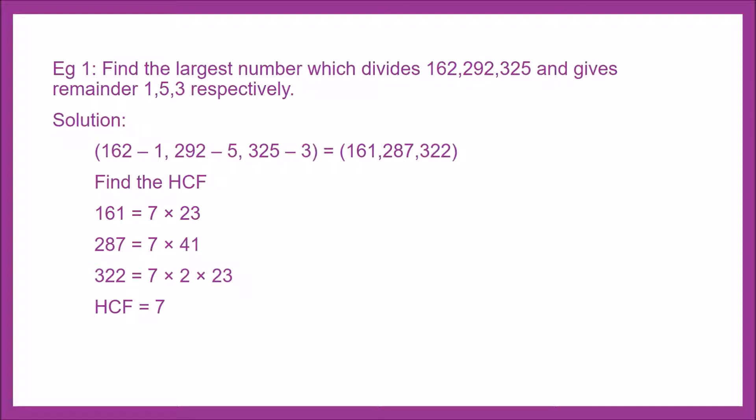Example 1: Find the largest number which divides 162, 292, 325 and gives remainder 1, 5, 3 respectively.